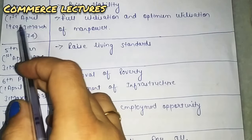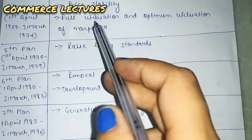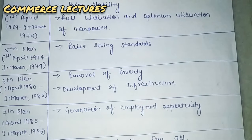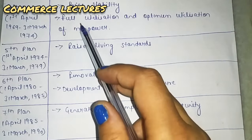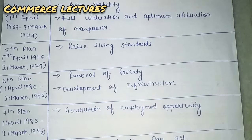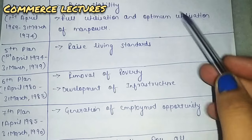The fourth plan ran from 1969 to 31st March 1974. Its main aims were price stability — keeping prices stable and not fluctuating so people can easily purchase — and full and optimum utilization of manpower, meaning maximum use of manpower, including those who have not yet developed enough skills.